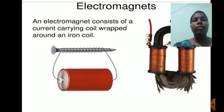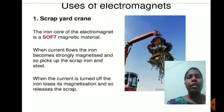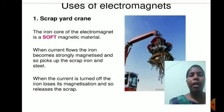An electromagnet consists of a current-carrying coil wrapped around an iron core. Uses of electromagnets: Scrap yard crane. The iron core of the electromagnet is a soft magnetic material. When current flows, the iron becomes strongly magnetized and picks up the scrap iron and steel. When the current is turned off, the iron loses its magnetization and releases the scrap.